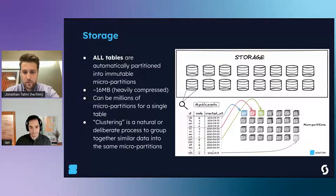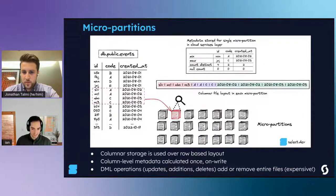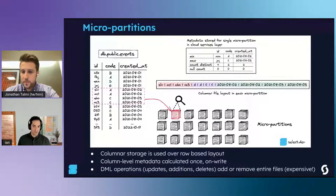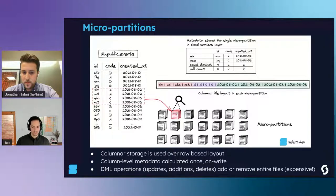Zooming into one of these micro-partition files, there are two noteworthy things. First, like other analytic databases, Snowflake uses a columnar file layout over a row-based layout, which is much faster for the types of queries we'll tend to run. Second, for every micro-partition Snowflake stores column-level statistics including min and max values, distinct value counts, null counts, and other statistics. It uses this during query optimization to determine the best execution plan - for example, what order to join tables in, and most importantly, which micro-partitions the query actually needs to scan based on the filters provided.